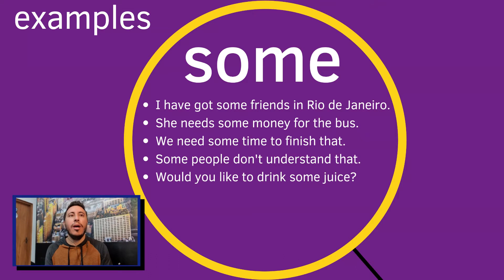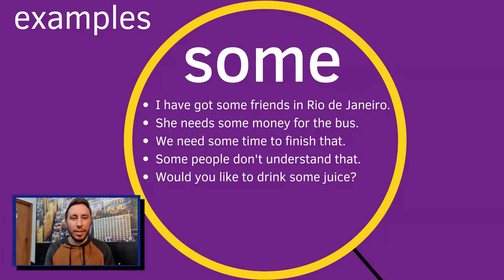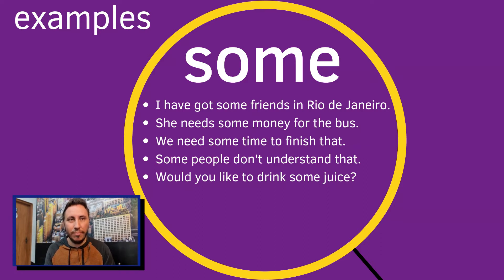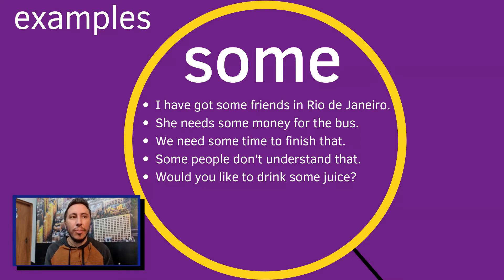The first example: I have got some friends in Rio de Janeiro. Here, some means alguns. So, I have got some friends — eu tenho alguns amigos. Example two: She needs some money for the bus. Here, some translates as algum or um pouco de. She needs some money — ela precisa de um pouco de dinheiro, or ela precisa de algum dinheiro. Third example: We need some time to finish that — a gente precisa de um pouco de tempo para terminar aquilo.